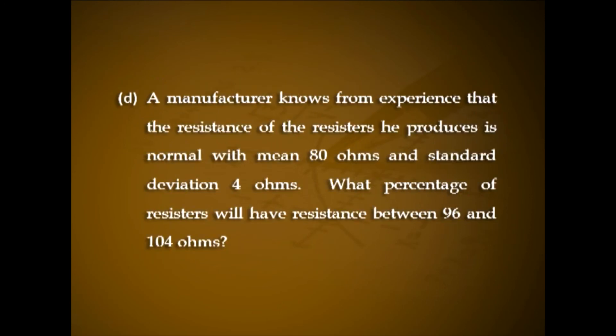In a normal distribution, 31% of the items are under 45 and 8% of the items are over 64. Find the mean and standard deviation of the distribution. The time for a glue to set is treated as a random variable having normal distribution with mean 25 seconds. Find its standard deviation if the probability is 0.15 that it will take a value greater than 40 seconds to set. A manufacturer knows that the resistance of resistors is normal with mean 80 ohms and standard deviation 4 ohms. What percentage of resistors will have resistance between 96 and 104 ohms?